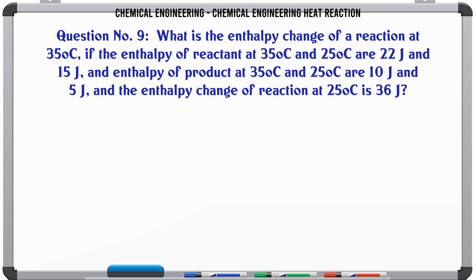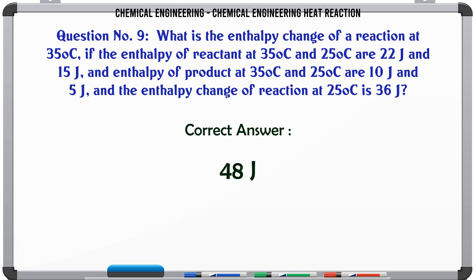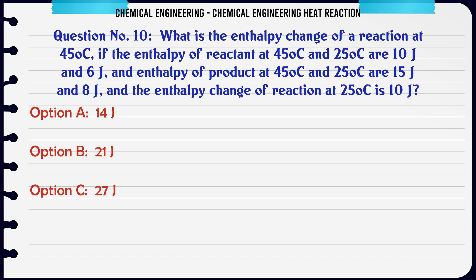What is the enthalpy change of a reaction at 35°C if the enthalpy of reactant at 35°C and 25°C are 22J and 15J, enthalpy of product at 35°C and 25°C are 10J and 5J, and the enthalpy change of reaction at 25°C is 36J? A: 12J, B: 24J, C: 36J, D: 48J. The correct answer is 48J.